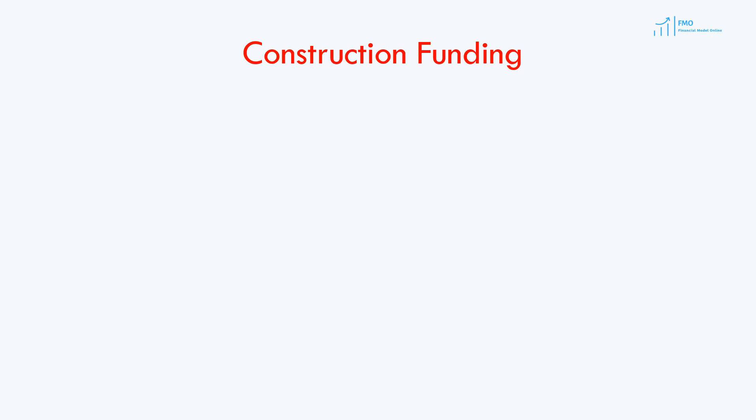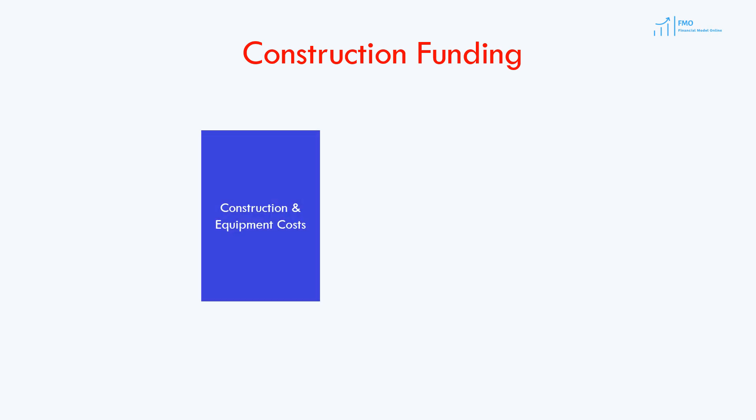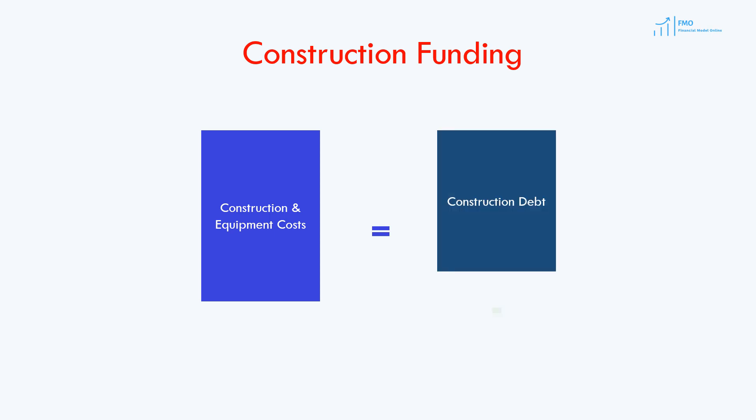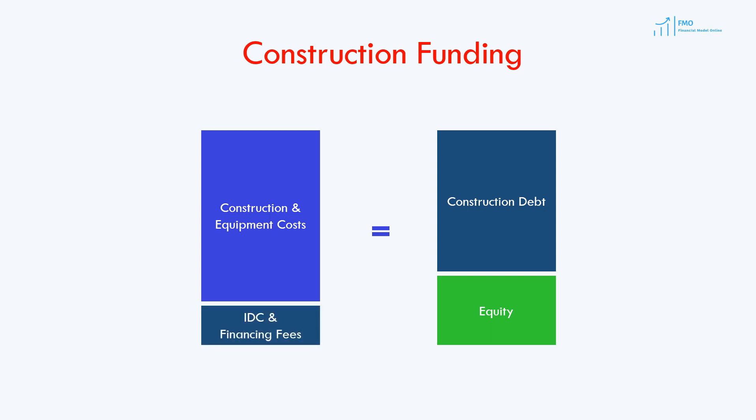We already modeled the construction costs in the previous lesson, and we also completed modeling the construction debt size in the prior lessons. Now we know how much we have to spend during the construction period, and where the money is going to come from — it will be debt and equity. However, the project will have to pay interest during construction on the construction loan and financing fees. These IDC and financing fees will also be a part of project costs.